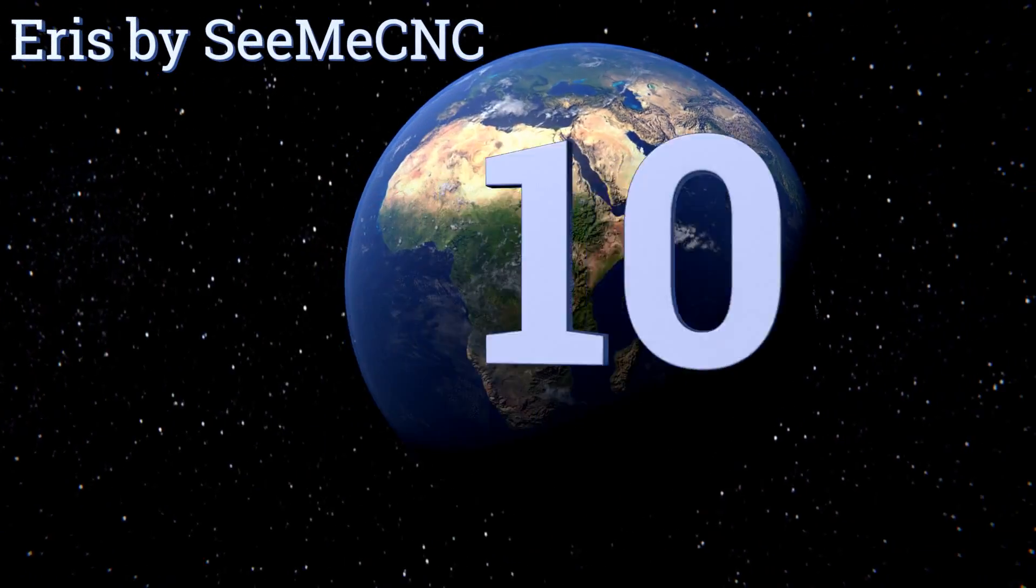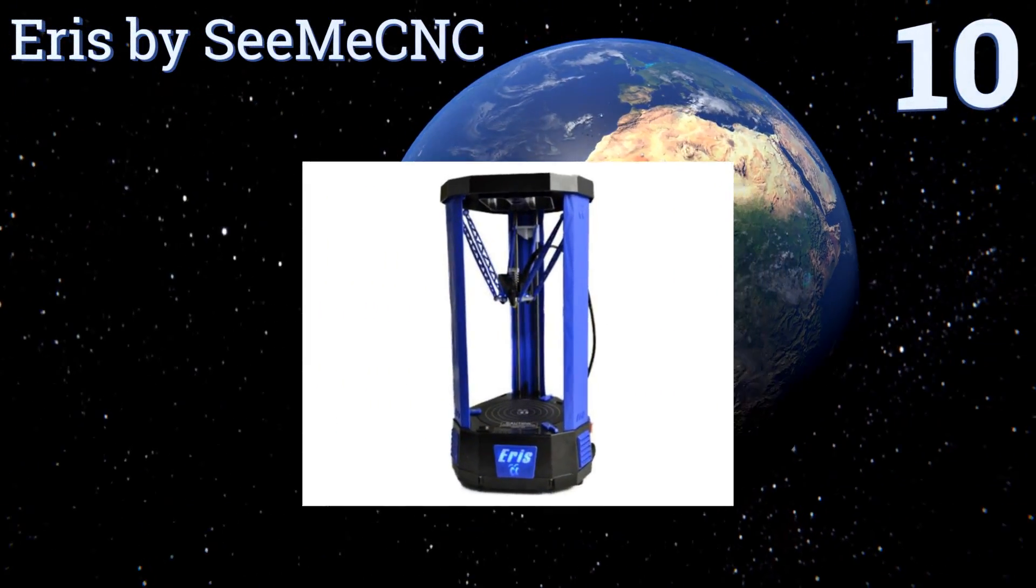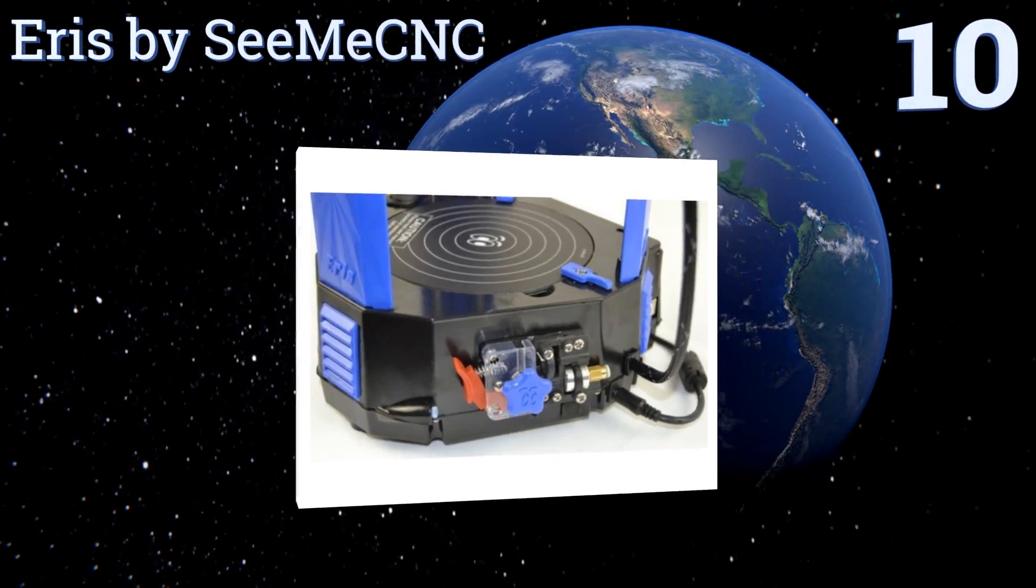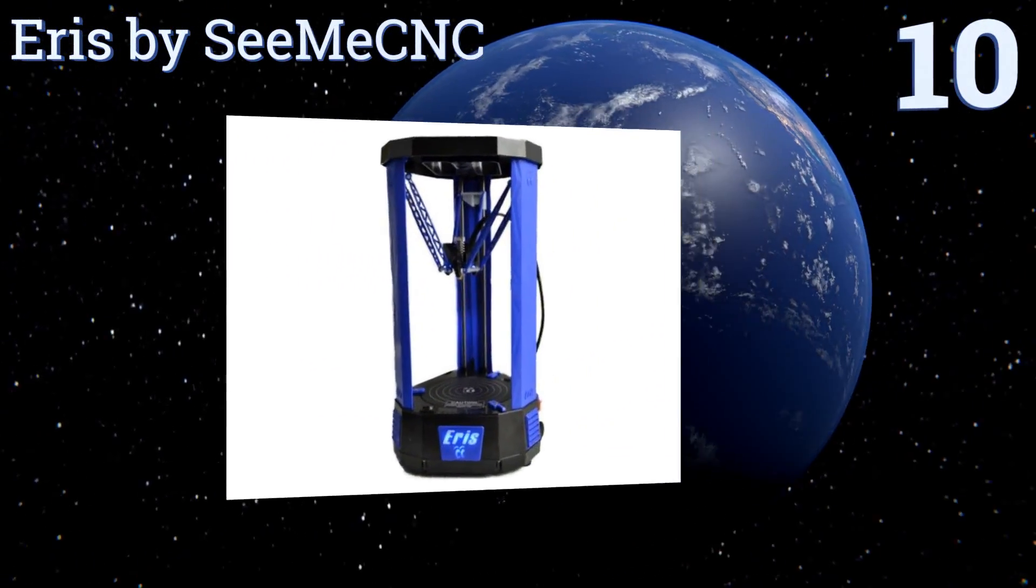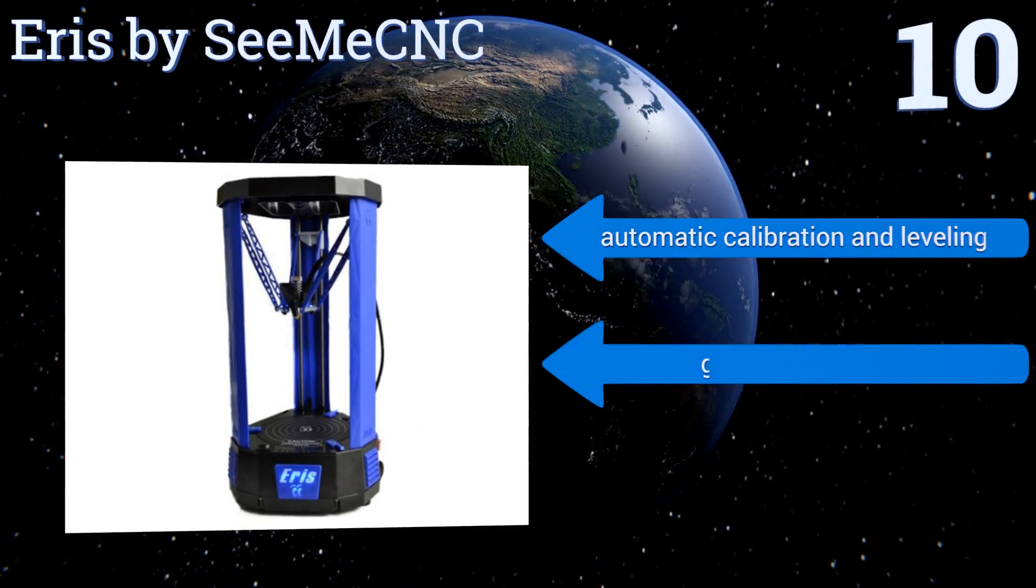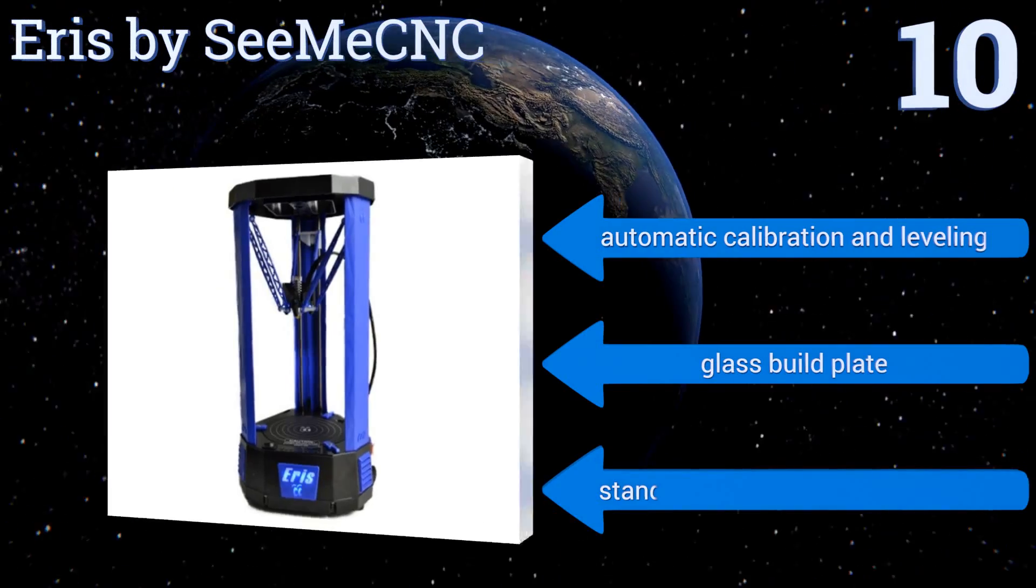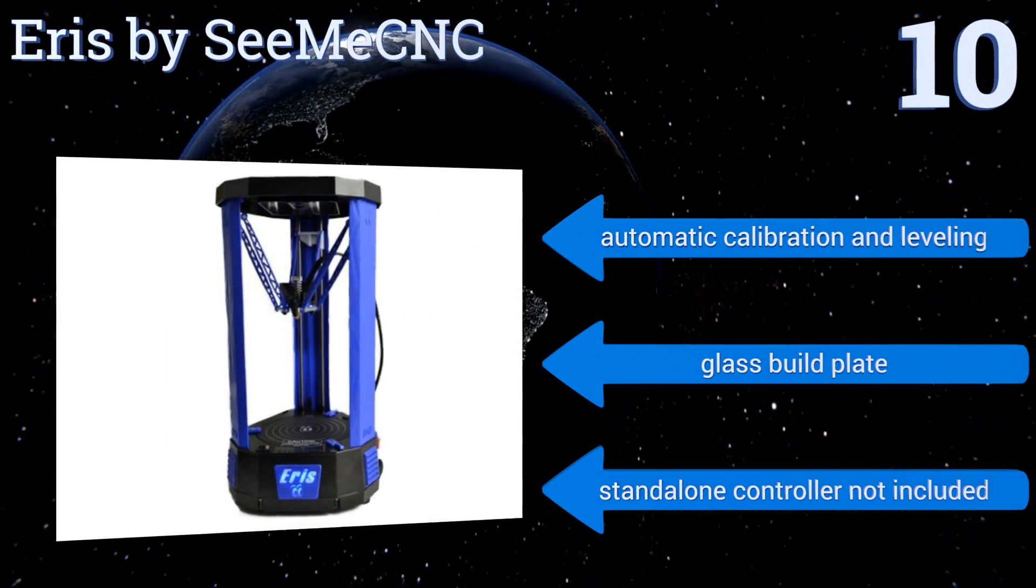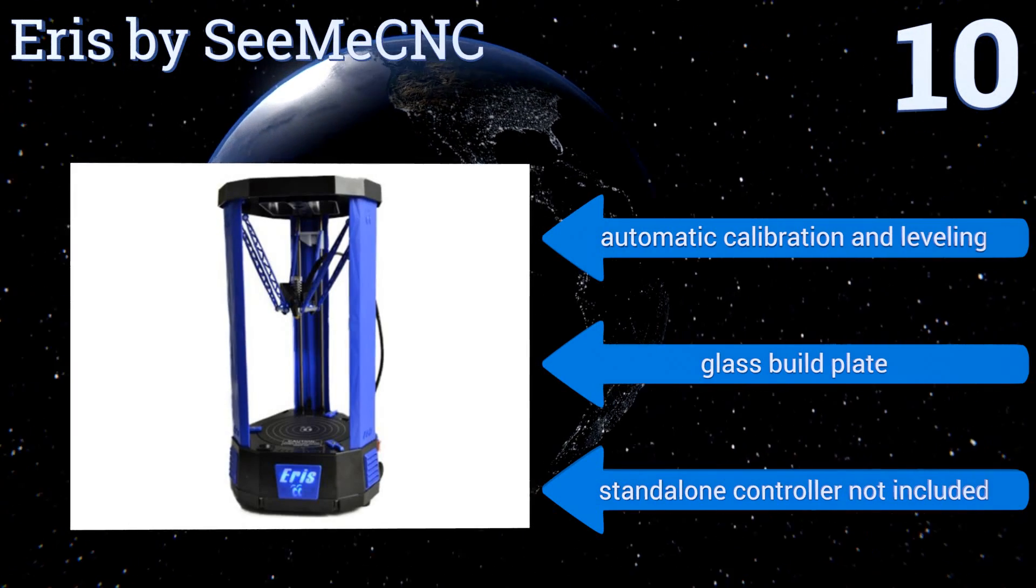Starting off our list at number 10, the pre-assembled Eris by SeeMeCNC makes the singular experience of working with a delta system inexpensive and portable enough to compete with the Cartesian devices that generally dominate the marketplace. But its open frame and unheated bed won't work with ABS filaments. It features automatic calibration and leveling and a glass build plate. However, a standalone controller is not included.